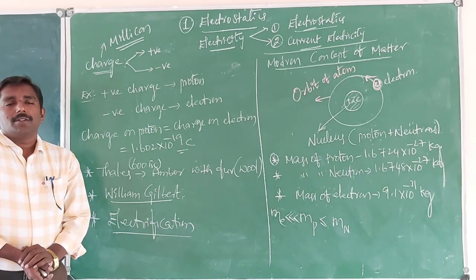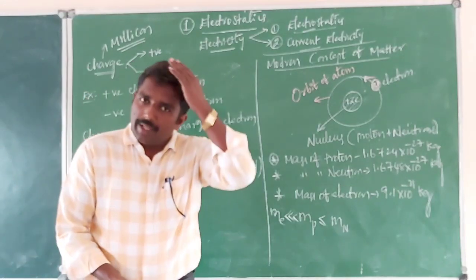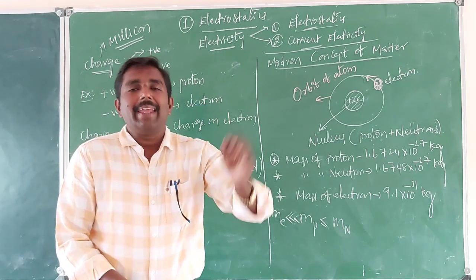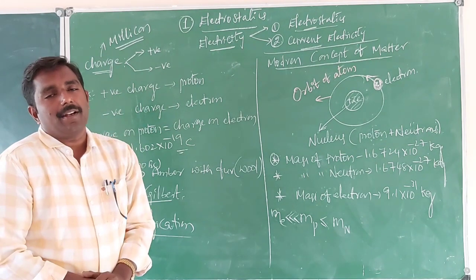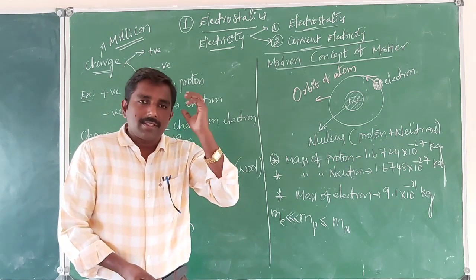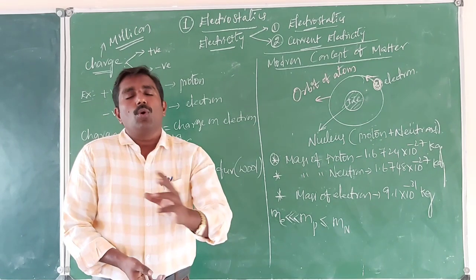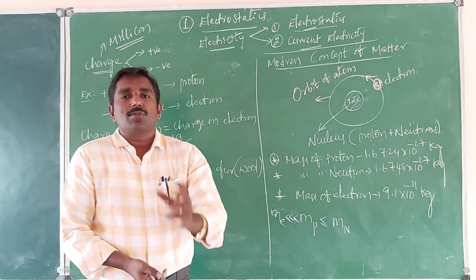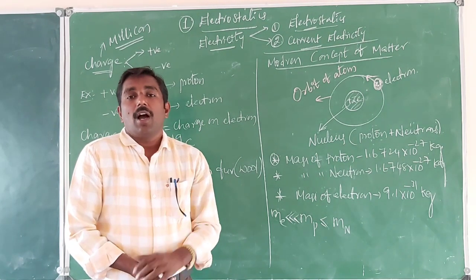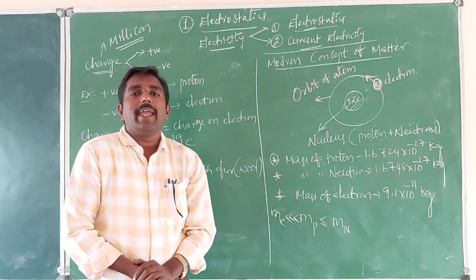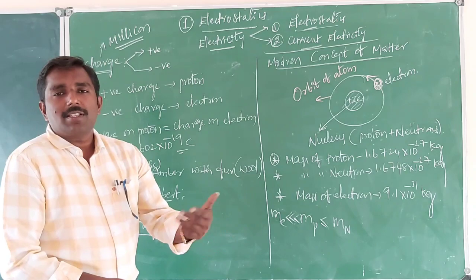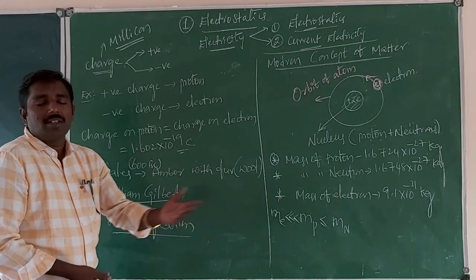Consider two bodies: a comb and dry air. After rubbing the comb with dry air, the comb attracts light objects. Both the air and comb are electrified. During rubbing, some electrons are transferred from air to comb, so the comb gains electrons and becomes negatively charged, while the air loses electrons and becomes positively charged. They attract each other because opposite charges attract, while like charges repel.